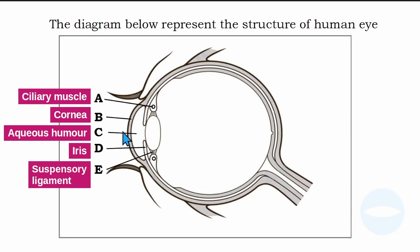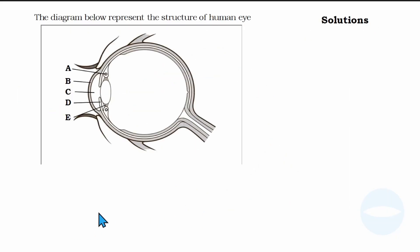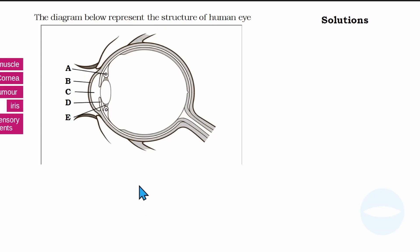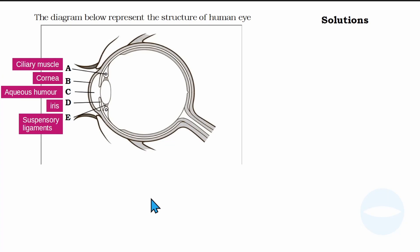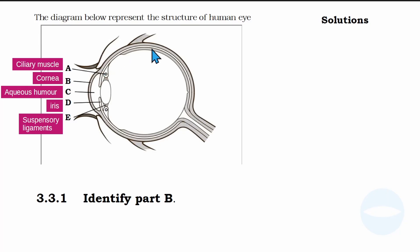Now let me get to the questions. Question 3.3.1 asks: identify part B. Part B is the cornea. As I said, the cornea is the transparent front part of the eye. Some say it is a continuation of the sclera — the sclera is the outer part of the eye, and as it continues at the front, it becomes the cornea. The cornea is transparent and allows light to pass through. So the answer to 3.3.1 is: part B is the cornea.